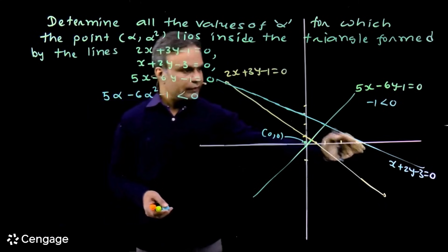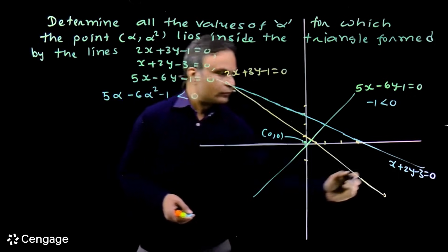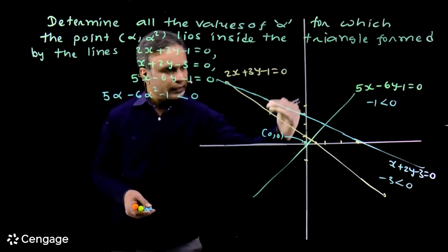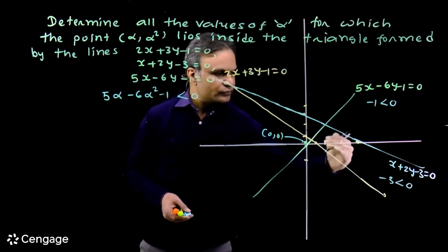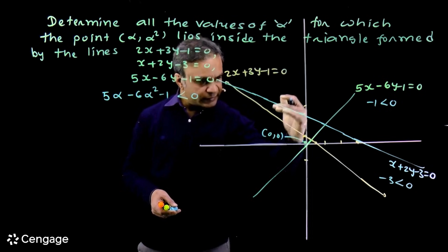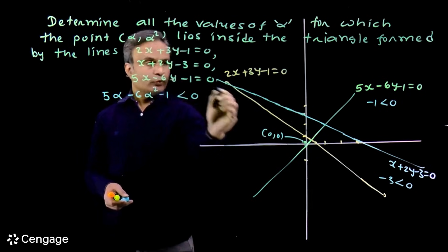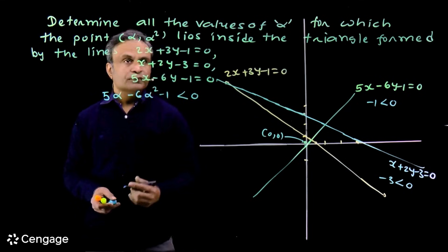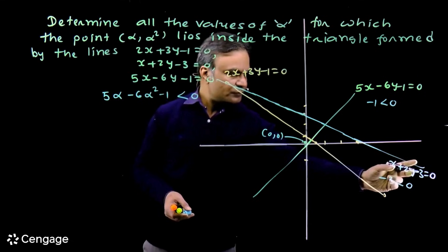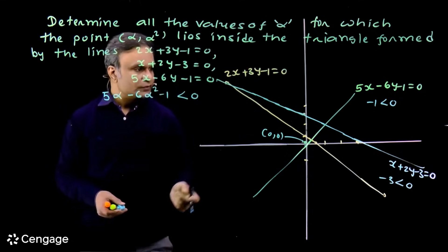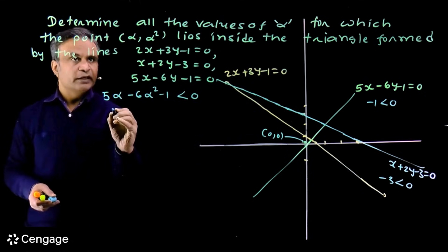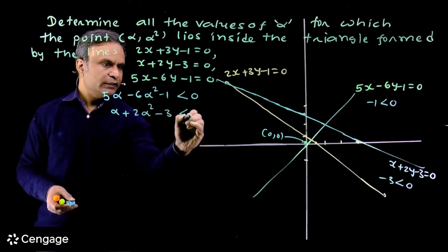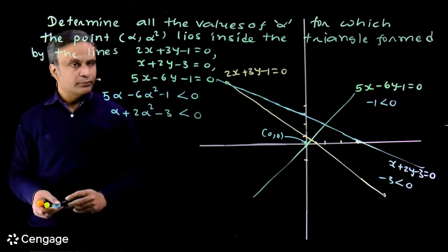Now we consider the second straight line, x plus 2y minus 3 equals 0. With respect to the origin, the sign of this expression is negative. The origin and the interior point lie on the same side of this line, so the sign with respect to this point must also be negative. Therefore we have: alpha plus 2α² minus 3 less than 0. This is condition number 2.